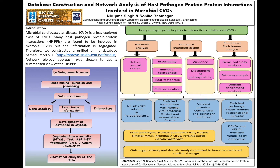Then I performed the network analysis and identified the hub or central nodes. These were those nodes that had high degree in the network. High degree means the number of interactions of a particular node in a network. I identified both the host and pathogen central nodes. The biological characterization of the proteins was also done. Host proteins were characterized on the basis of essentiality, immune-relatedness, host-factor role, and cellular location.